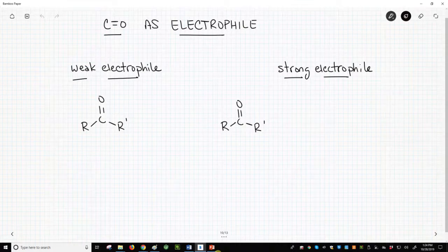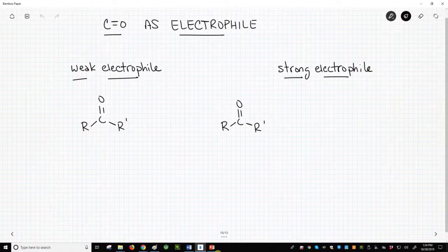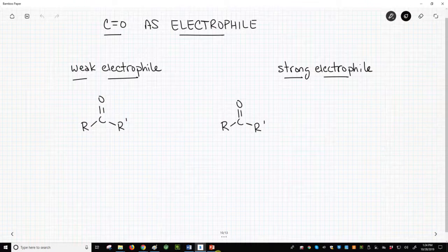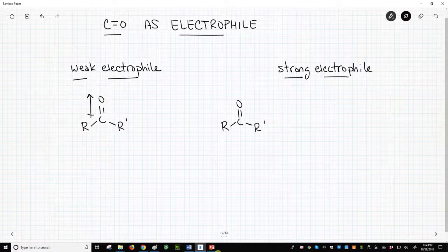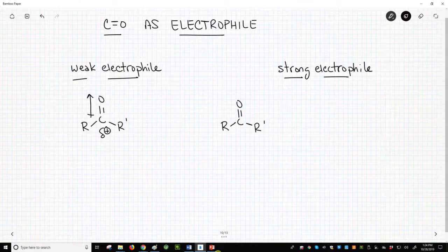Carbonyls are electrophiles. A neutral carbonyl, like a ketone, which we show on the left, is a weak electrophile. We can think of the carbon as being electron poor because of the polarized CO-pi bond. So we have a partial plus on carbon. That's a weak electrophile.